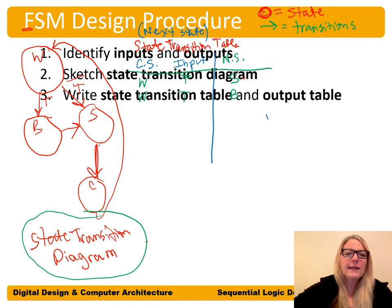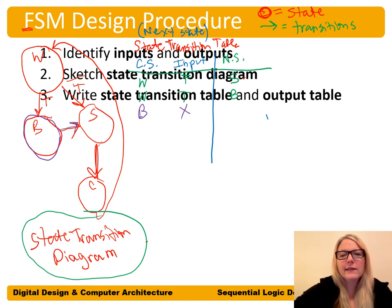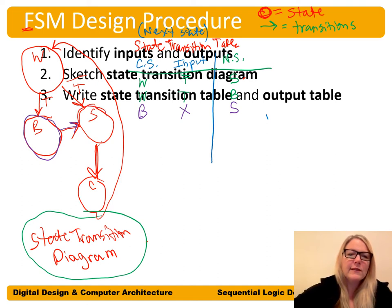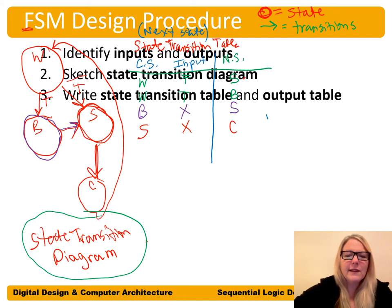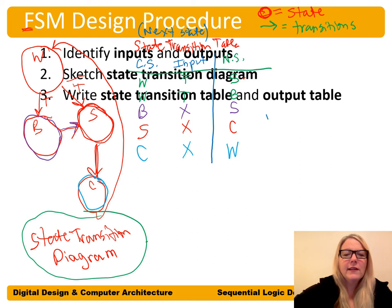For the breakfast state, no matter what the input is — there's nothing on that transition — we put a don't-care, and the next state is the shower state. For the shower state, it also doesn't depend on inputs; the next state is the class state. Finally, for the class state, regardless of inputs, the next state is the wake-up state.